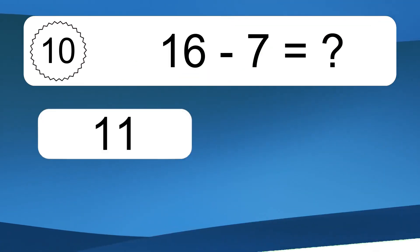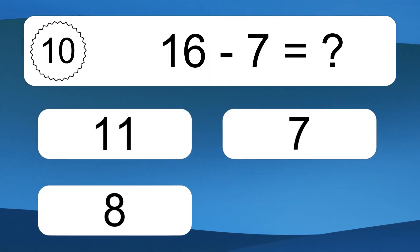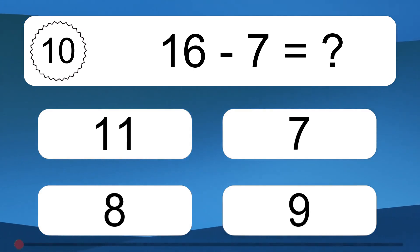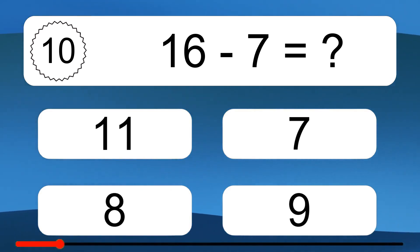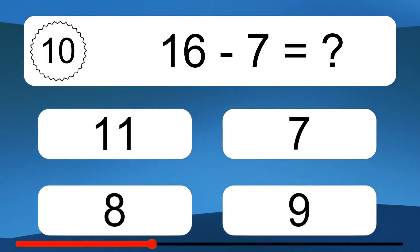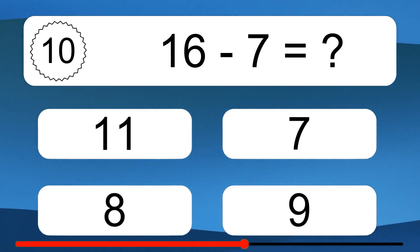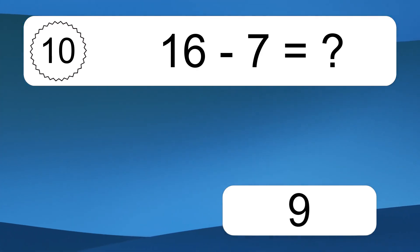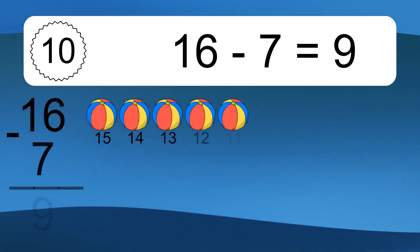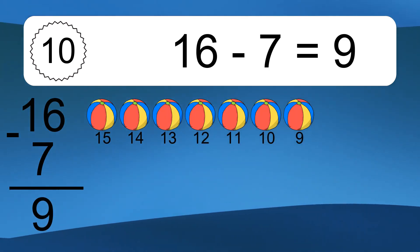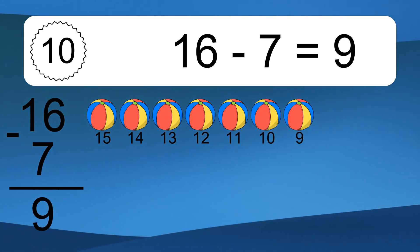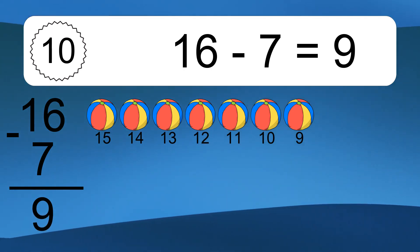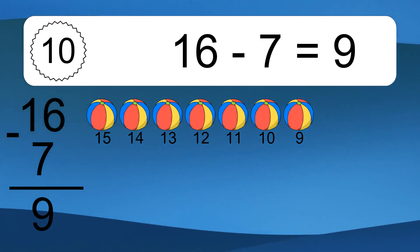16 minus 7 equals what? 16 minus 7 equals 9. Let's count it: 15, 14, 13, 12, 11, 10, 9.